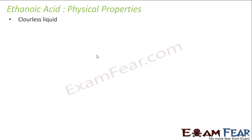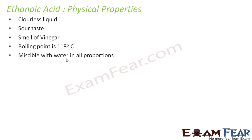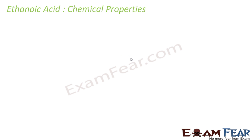The physical properties of ethanoic acid: it is colorless, it has a sour taste, it has a smell of vinegar, it has a boiling point of 118 degrees Celsius — a pretty high boiling point — and it is miscible with water.